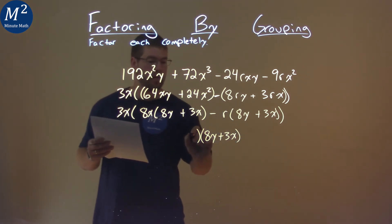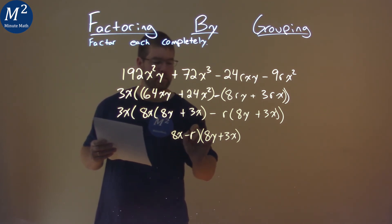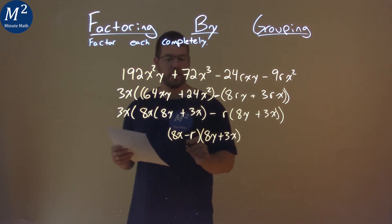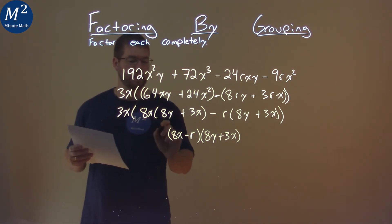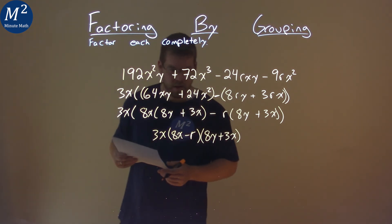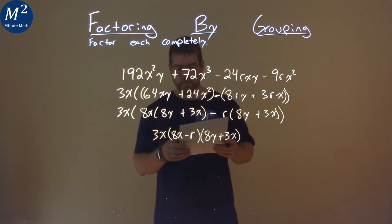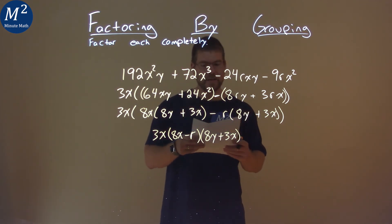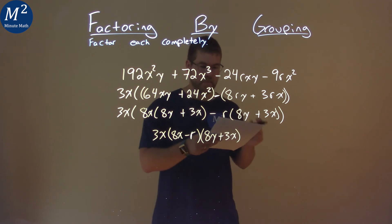And we're left with that, well multiply it right here, the r, or the 8x minus r. 8x minus r. Now don't forget the 3x still needs to come down. And so our final answer here is just 3x times 8x minus r times 8y plus 3x.